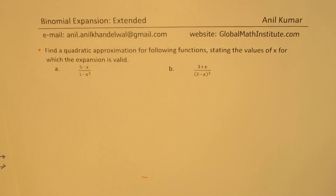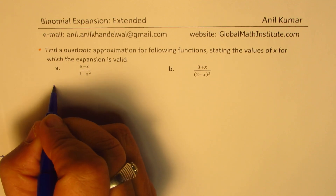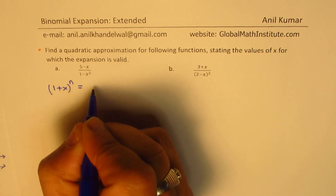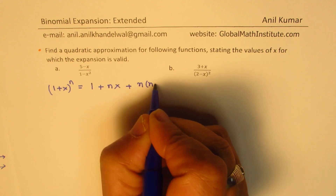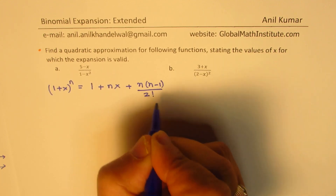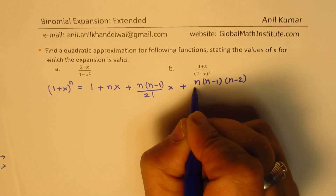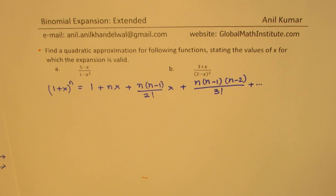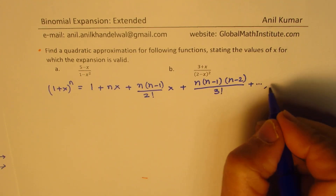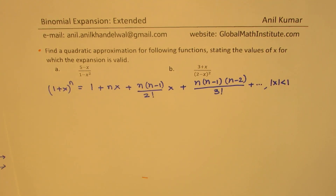So when we say the expansions, what we have is that 1 plus x to the power of n can be written as 1 plus nx plus n times n minus 1 over 2 factorial times x squared plus n times n minus 1 times n minus 2 over 3 factorial, and so on. The second part is stating the restriction: the absolute value of x should be less than 1 so that this series converges.